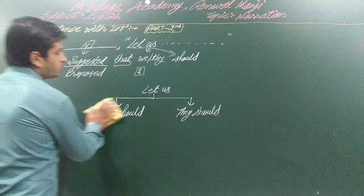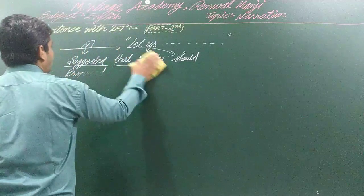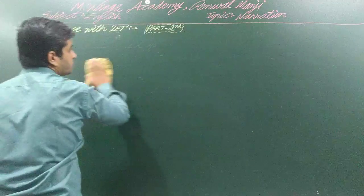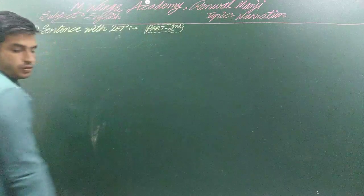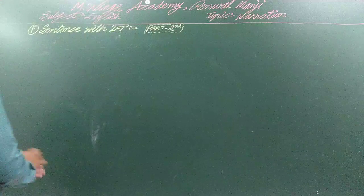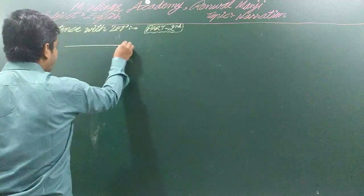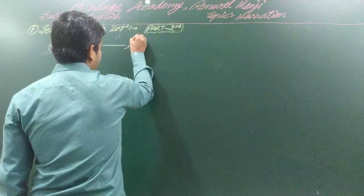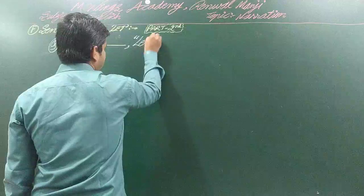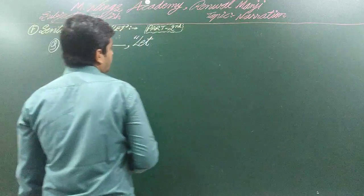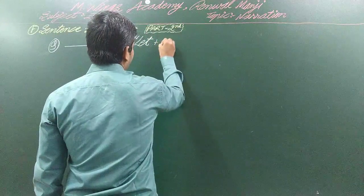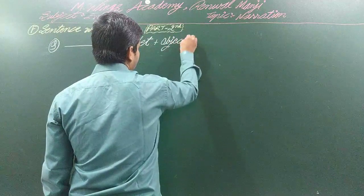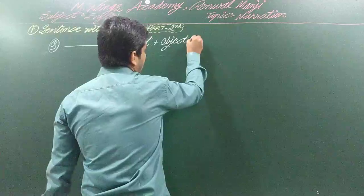Today we will discuss when 'let' is given but with another object. We will discuss the situation where 'let' is given at the beginning of the reported part, but in that sentence we do not have the object in the form of 'us'.